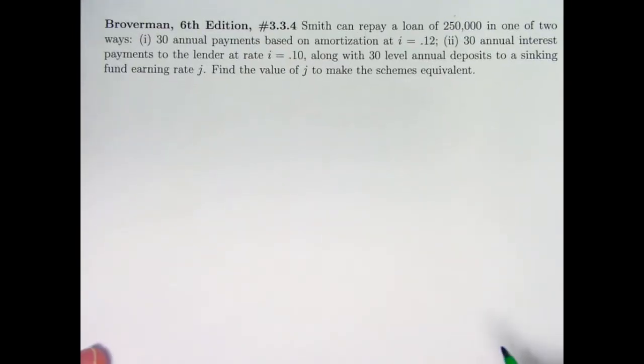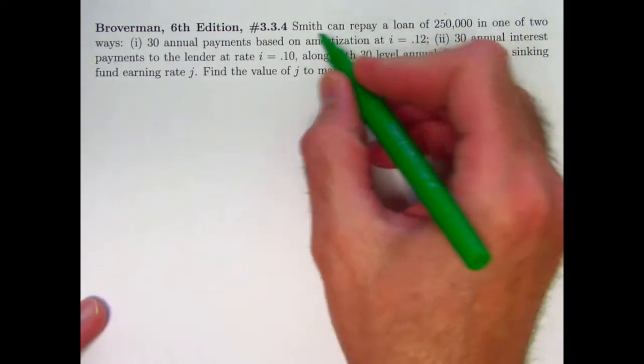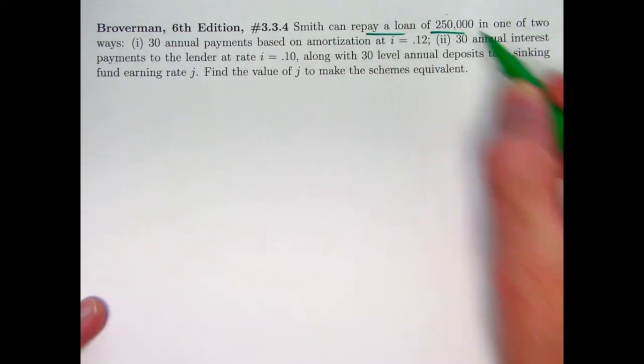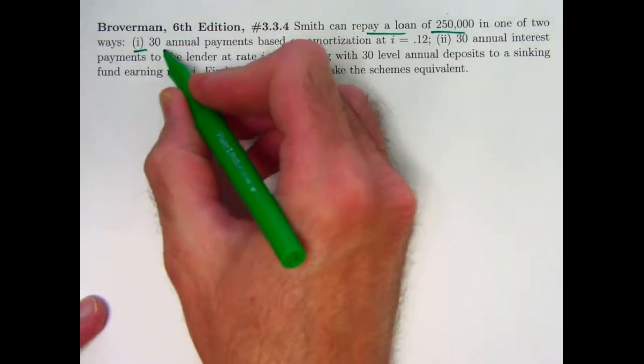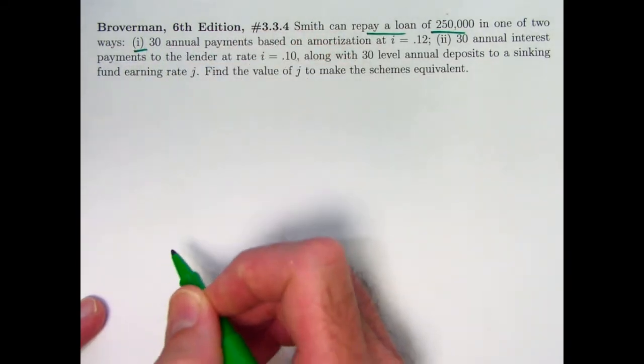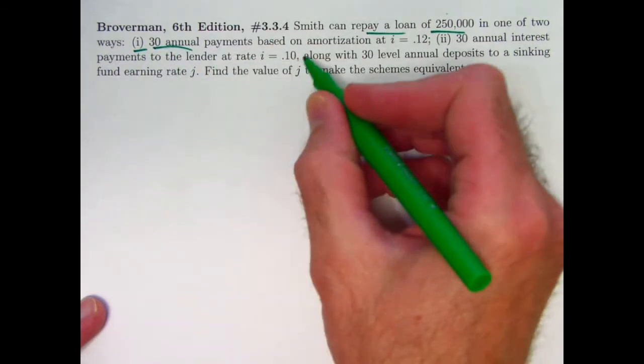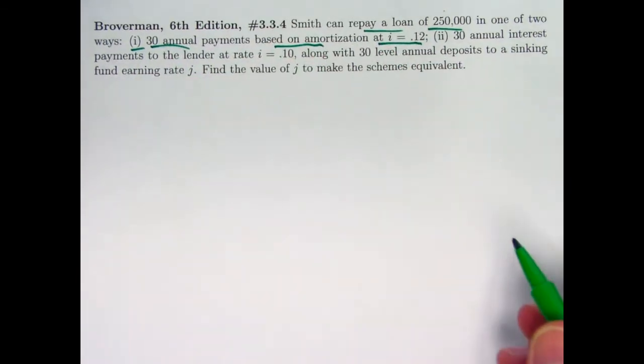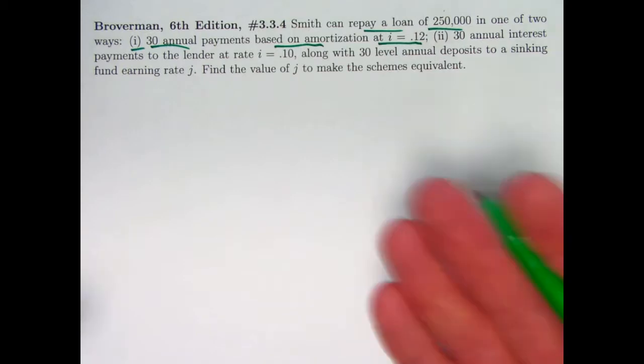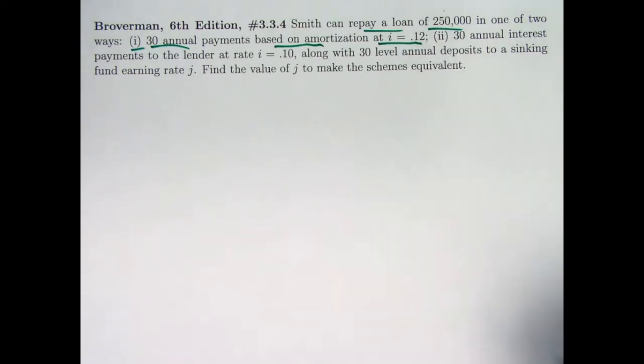It's problem 3.3.4 in Broverman. Smith can repay a loan of $250,000 in one of two ways. The first way is an ordinary way, although they are annual payments instead of monthly. 30 annual payments based on an amortization of i equals 0.12, so the assumption there is this is going to be paid back with an annuity immediate, even though it doesn't say that, and 0.12 is an effective annual rate.